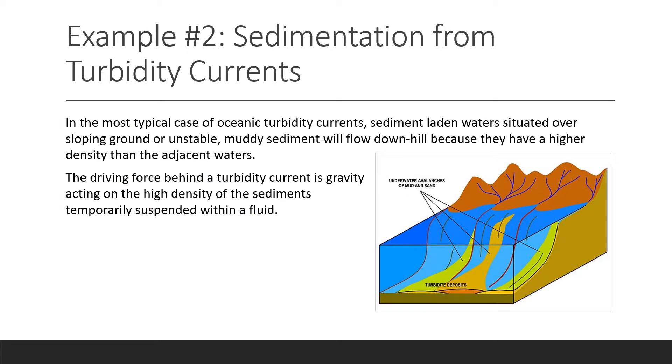The second example of transport phenomena is sedimentation from turbidity currents. In the most typical case of oceanic turbidity currents, sediment laden waters situated over sloping ground or unstable muddy sediment will flow downhill because they have a higher density than adjacent waters. The driving force behind a turbidity current is gravity acting on these high-density sediments that are temporarily sustained within the sediment laden water.